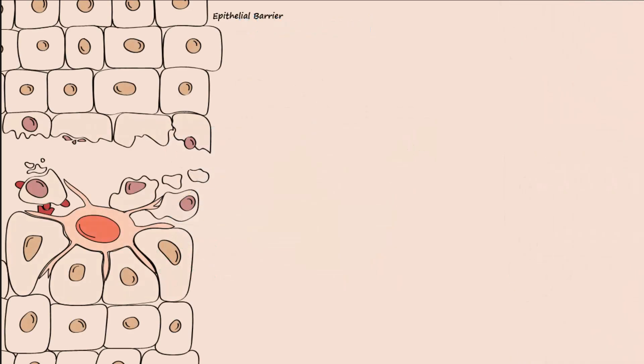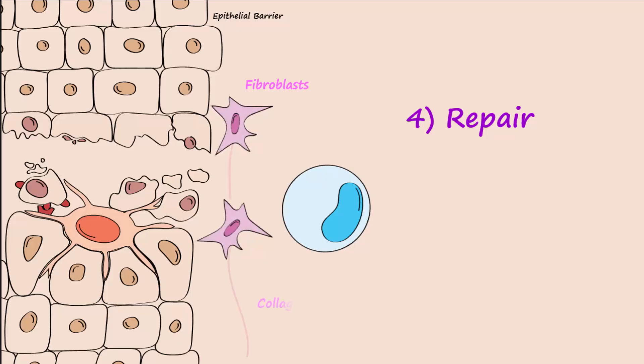The final step of the inflammatory process is repair. This is accomplished as the white blood cells release cytokines and growth factors to initiate the repair of damaged tissues. For example, cytokines stimulate fibroblasts to lay down a new collagen matrix to repair the basal membrane of the epithelial barrier.